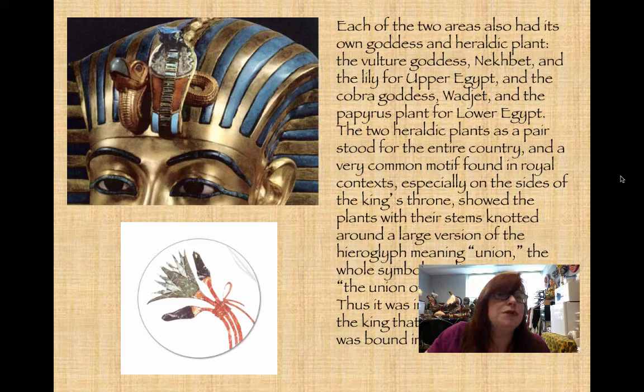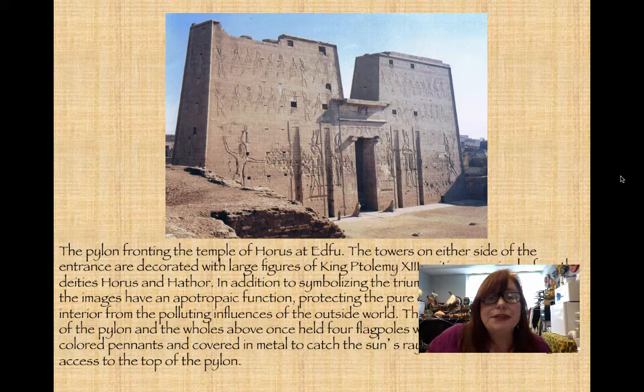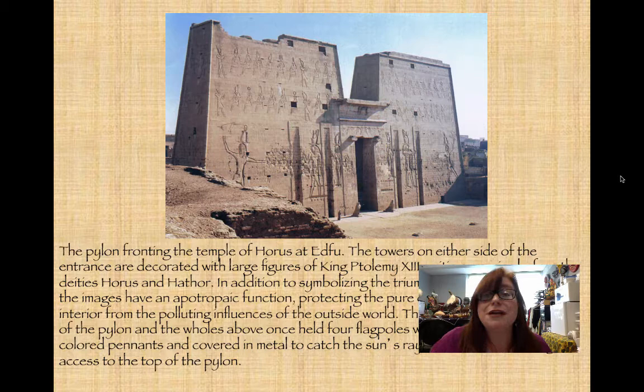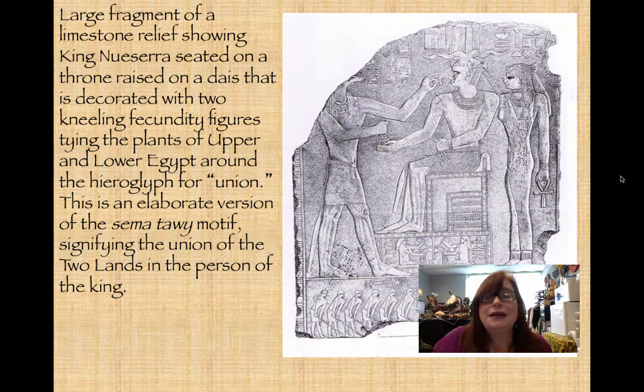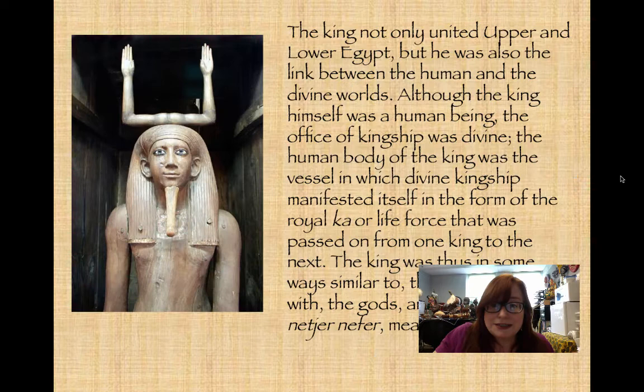Here you're looking at the Temple of Horus at Edfu. We'll see this kind of imagery over and over again: the king is shown on both sides of the temple in mirror images, smiting his enemies. That was one of the ways in which the king proclaimed his power over the forces of chaos — by defeating the enemies of Egypt. And here again we have the sema-tawy motif.